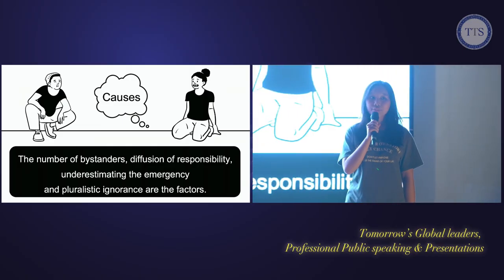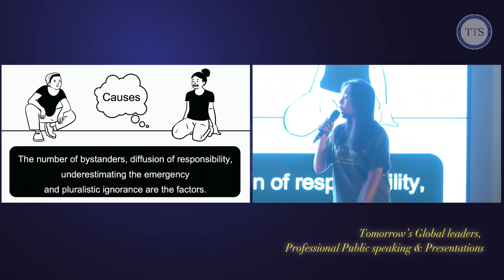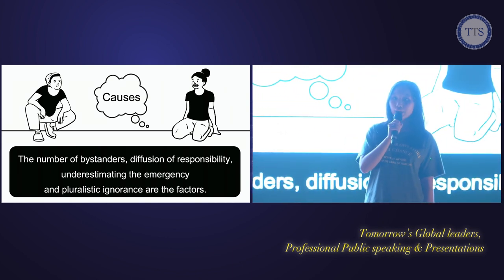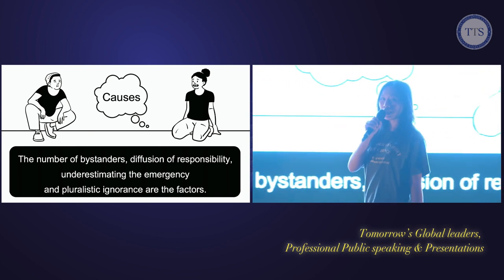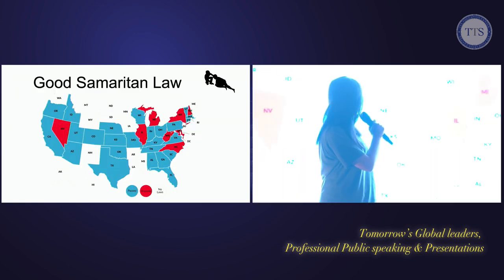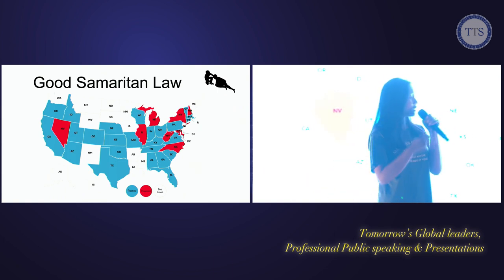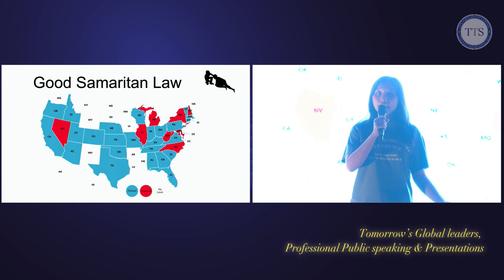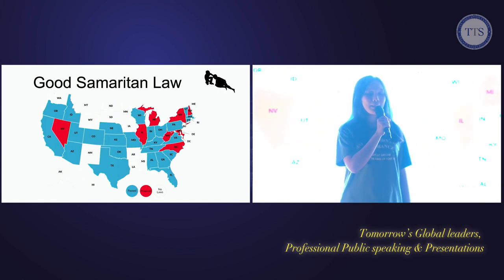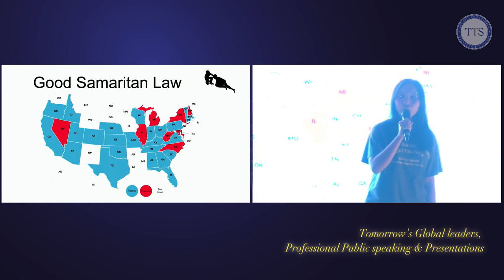Diffusion of responsibility means that people think someone else will take care of the problem, so they do nothing. Underestimating the emergency means not recognizing the seriousness of the situation. Pluralistic ignorance means following others' inaction and assuming no help is needed. Bystander effects have been observed in many areas such as Vietnam, Japan, and other countries. But the effect remains the same — we need to be aware and take action when necessary to help those in need.